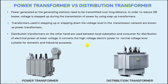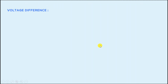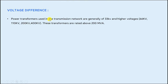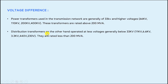Now let's discuss the other differences between power transformers and distribution transformers in detail. The first point is the voltage difference. Power transformers used in the transmission network are generally rated at 33 kV and higher voltages, and are rated above 200 megavolt-ampere. Distribution transformers, on the other hand, operate at lower voltages — generally below 33 kV — and are rated less than 200 megavolt-ampere.